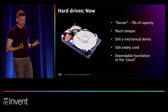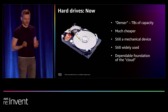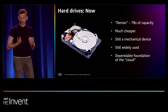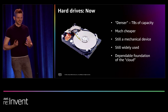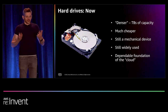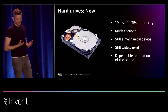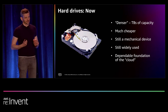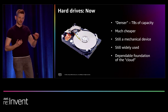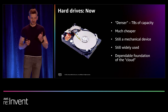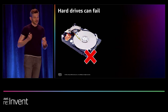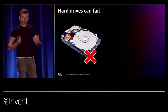Hard drives have become more compact, more dense, and substantially cheaper — certainly not $50,000 for five megabytes. Hard drives, to this day, remain the workhorses of the cloud. While we use other media such as flash and SSDs, hard drives are very attractive due to their cost and efficiency. One thing that didn't change about hard drives, though, is they are mechanical devices — they have spinning disks and a head that travels along the spinning disk to read and write data.